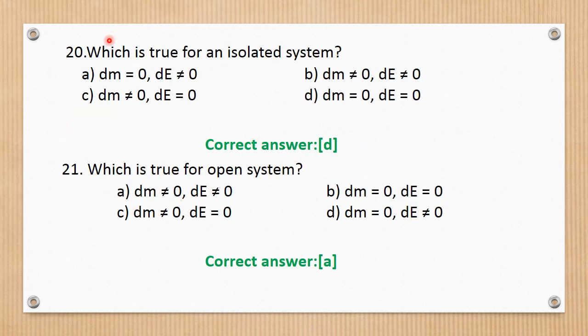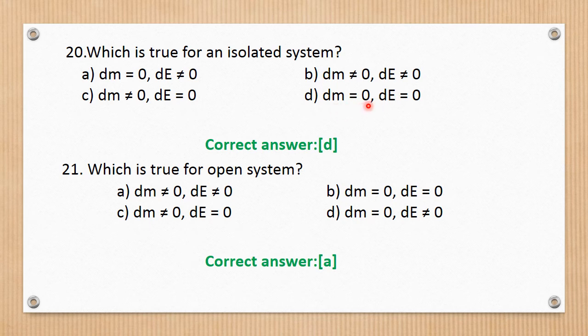Question number 20. Which is true for an isolated system? In an isolated system, both mass and energy cannot transfer between the system and surroundings: dM = 0 and dE = 0. The correct answer is D.